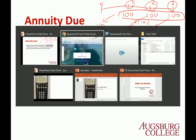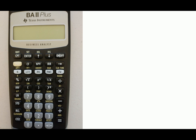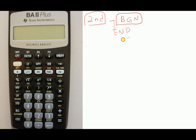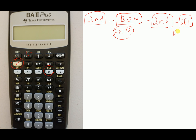Let's look at the calculator. There's a second button — use that to change the mode. There's a BGN button here. If you press it, you'll see END displayed, meaning you're on end mode. To switch, press second, then the SET button. You should then have BGN displayed, confirming you are now in beginning mode.